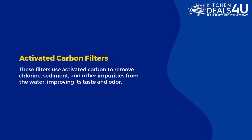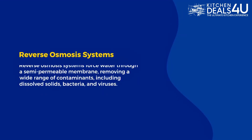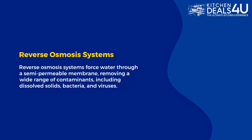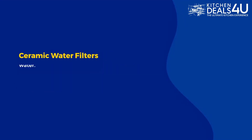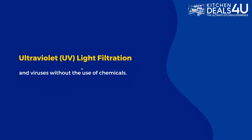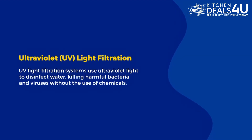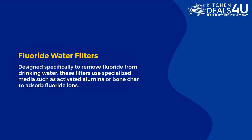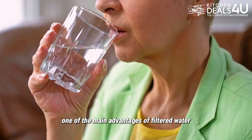Some of the most common water filtration methods include: activated carbon filters, which use activated carbon to remove chlorine, sediment, and other impurities, improving taste and odor; reverse osmosis systems, which force water through a semi-permeable membrane removing dissolved solids, bacteria, and viruses; ceramic water filters made from porous ceramic material, effective at removing bacteria, protozoa, and microorganisms; ultraviolet UV light filtration, which uses UV light to disinfect water killing harmful bacteria and viruses without chemicals; and fluoride water filters, which use activated alumina or bone char to absorb fluoride ions.